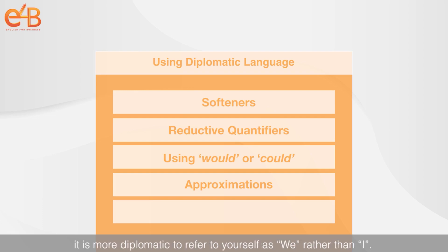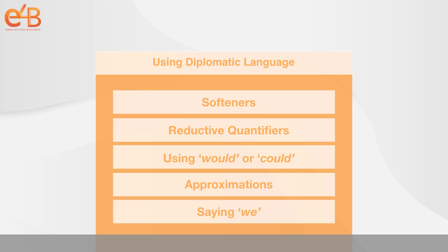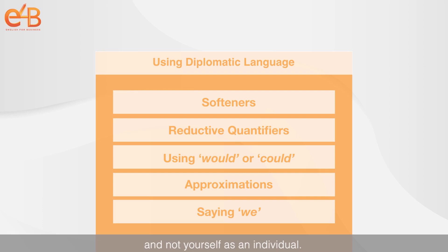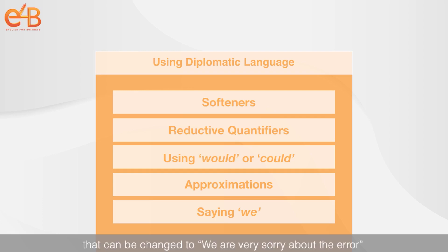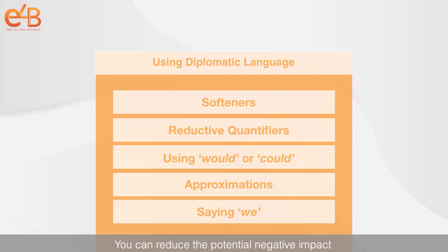Finally, when you're communicating in business, it is more diplomatic to refer to yourself as 'we' rather than 'I.' When you do that, it shows you're speaking on behalf of a company and not yourself as an individual. So rather than saying 'I'm very sorry about the error,' that can be changed to 'we are very sorry about the error.' You immediately reduce the potential negative impact when making a negative statement.